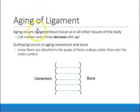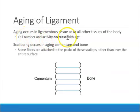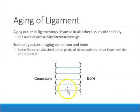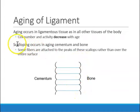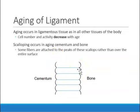As we age, the periodontal ligament fibers aren't as strong because the cells within them decrease in number and activity. Microscopically, you'll notice the cementum and bone become scalloped rather than straight, and the fibers attach only to those peaks rather than the entire surface. So the periodontal ligament fibers are not as strong as we age.